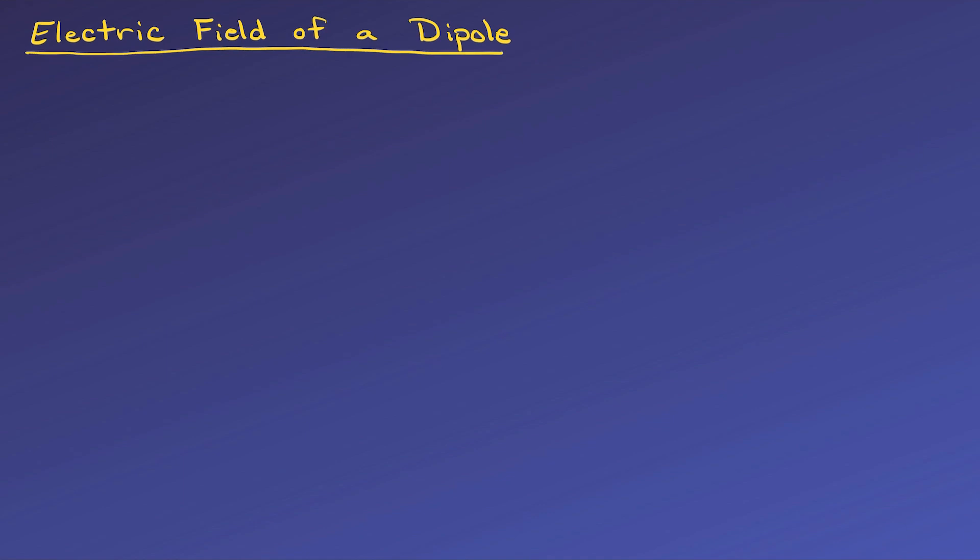When a charge separates, such that there is the same amount of positive and negative charge a small distance apart, it forms an electric dipole. Dipole meaning two poles, one positive and one negative.